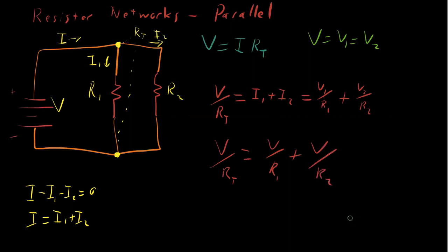And that makes our life quite good because we can then just factor out the V's and solve for RT. And so we can pull out V and just cancel off all the V's and say that one over RT is equal to one over R1 plus one over R2.